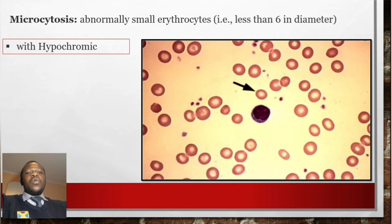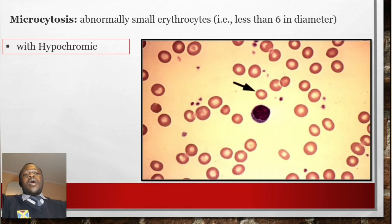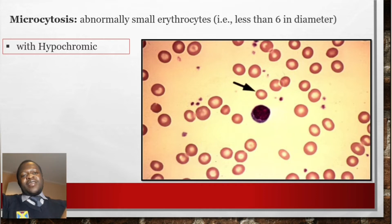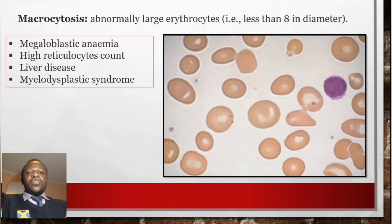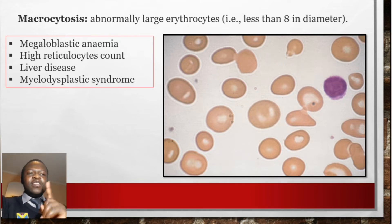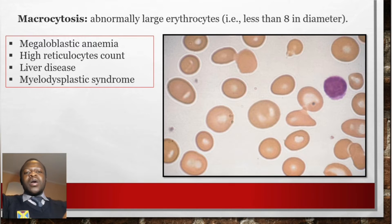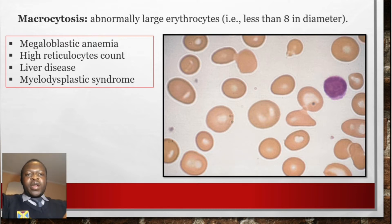Microcytosis refers to abnormally small erythrocytes. Macrocytosis refers to abnormally large erythrocytes greater than 8 micrometers in diameter. Macrocytosis is found in megaloblastic anemia, high reticulocyte count, liver diseases, and myelodysplastic syndromes.